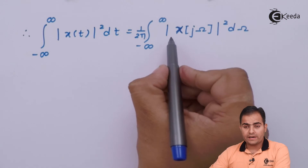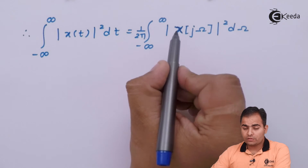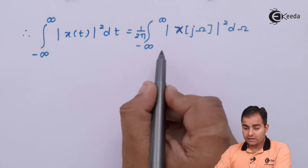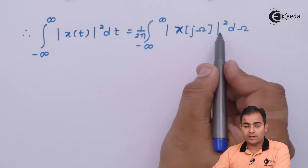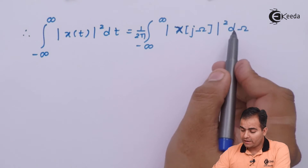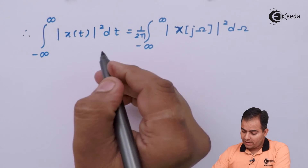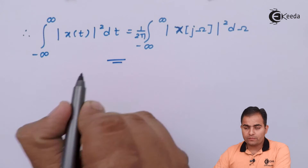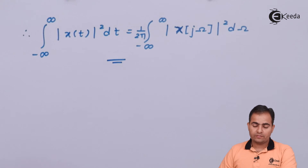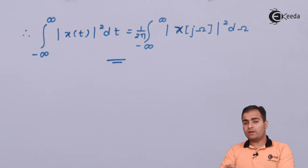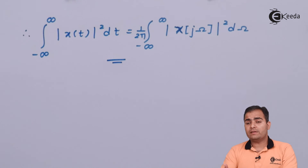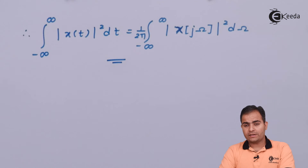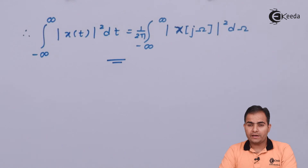On the right hand side, I have replaced x(jω) and x*(jω) by mod of x(jω) whole square, and dω is there. This is nothing but the proof of Parseval's relation. So this is all about this property. Now we will study a new topic in the next video. Stay tuned to Ikeda and subscribe to Ikeda for further videos.